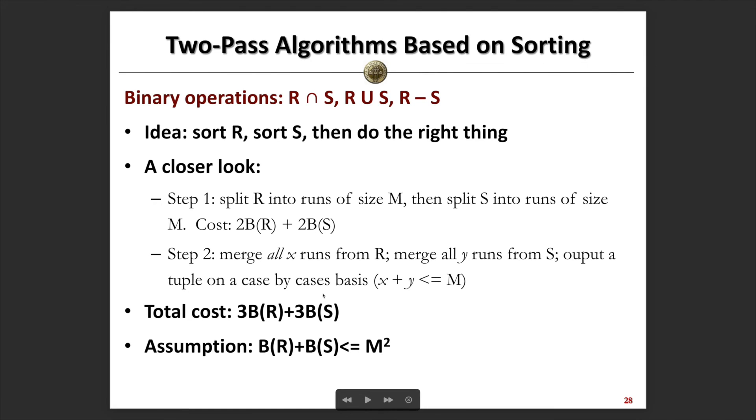Because for the merging, we have to load the tuples or blocks from both relations R and S concurrently into memory. We need to ensure the size of R and S is no greater than M². So this is how to do the binary operations with the two-pass algorithm in a similar way.